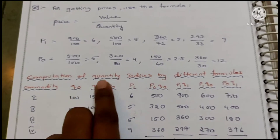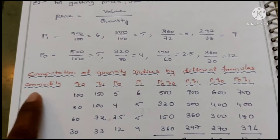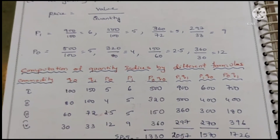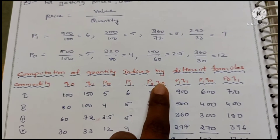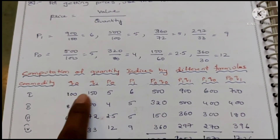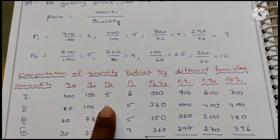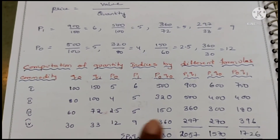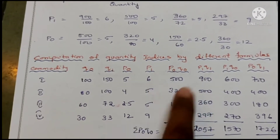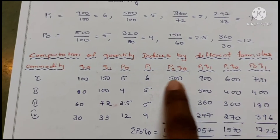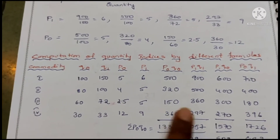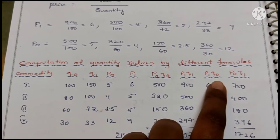Now we set up the table with columns: Commodity, Q0, Q1, P0, P1. For Laspeyre's and Fisher we need: P0Q0, P1Q1, P1Q0, and P0Q1. Calculating P0Q0: 100×5=500, 80×4=320, 60×25=150, 30×12=360. For P1Q1: 6×150=900, 5×100=500, 5×72=360, 9×33=297.